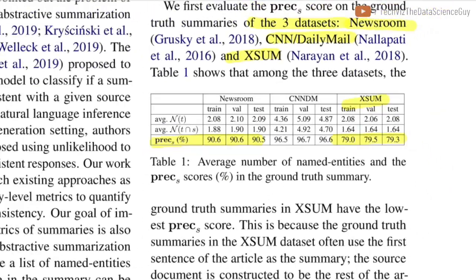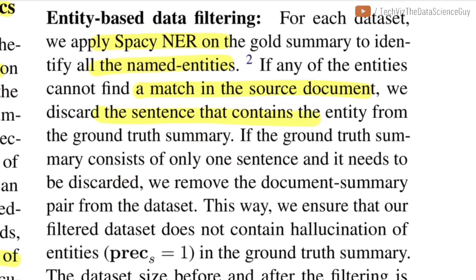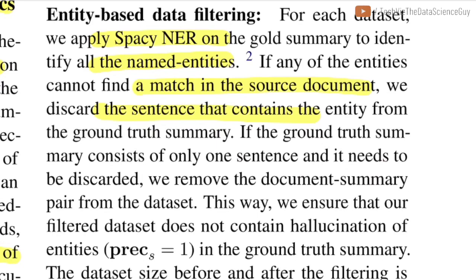They came up with a technique called entity-based data filtering, where the strategy is to clean the dataset so that the ground truth data has at least high precision. They apply a NER model on the gold summary to identify all named entities. If any entity does not occur in the source document, the sentence containing that entity is discarded. In cases where the summary is just a single sentence and that sentence has an entity not in the source document, the entire document-summary pair is removed from the dataset. This ensures the dataset used to train summarization models has an entity precision value of one.